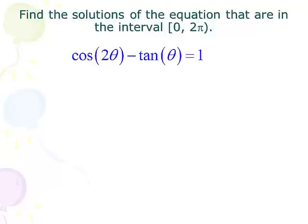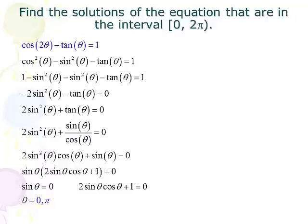Let's try the next one. It says cos(2θ) - tan(θ) = 1. And so we're going to have to use the double angle formula for cosine in this one. Well there's a lot going on here. Look at that. So we take cosine 2θ and we change it to cos²θ - sin²θ. We still have the minus tangent θ and the one.